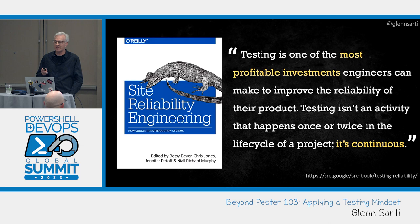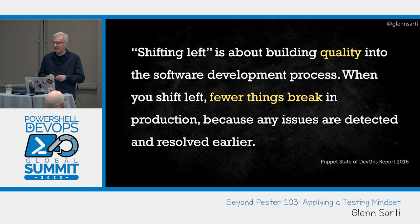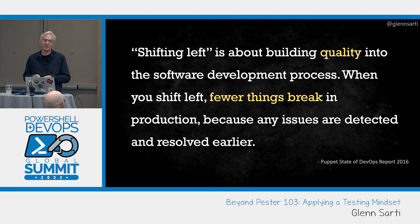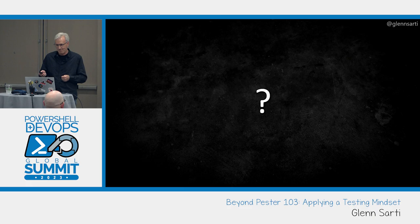Testing isn't an activity that happens once or twice — it happens continuously. You may have heard of the term 'shifting left,' which is about building quality early into the software development process. This isn't new; programmers knew about this back in the 1950s. When you shift left, fewer things break in production because issues are detected and resolved earlier. Finding bugs in your PowerShell is much easier when you're writing it, not when you're running it — especially when the script reboots all of production, which has been done.